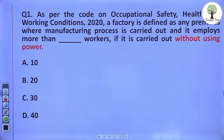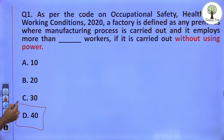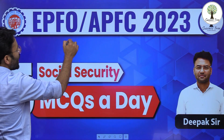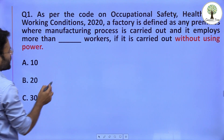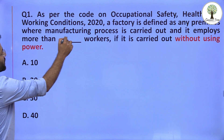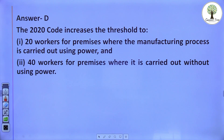This is quite an easy question. The answer is 'D' — 40 or more workers are required for this purpose. That is, 40 or more workers must be working for the effective implementation of this Act without the use of power.